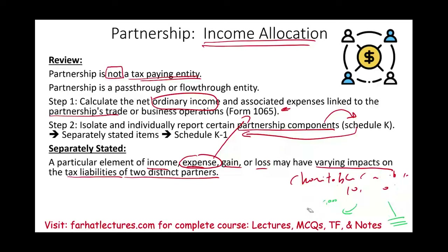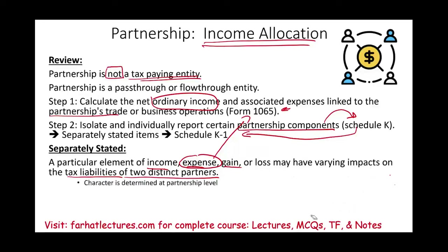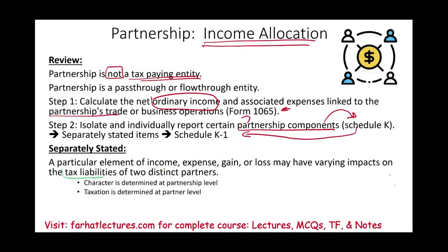Any items that could be treated differently between two partners will be reported separately. The character is determined at the partnership level — we have a charitable contribution. The taxation of that item is determined at the partner level. Some partners take advantage of the charitable contribution because they have other itemized deductions; other partners receive that $5,000 notification and it doesn't affect their tax liability at all.